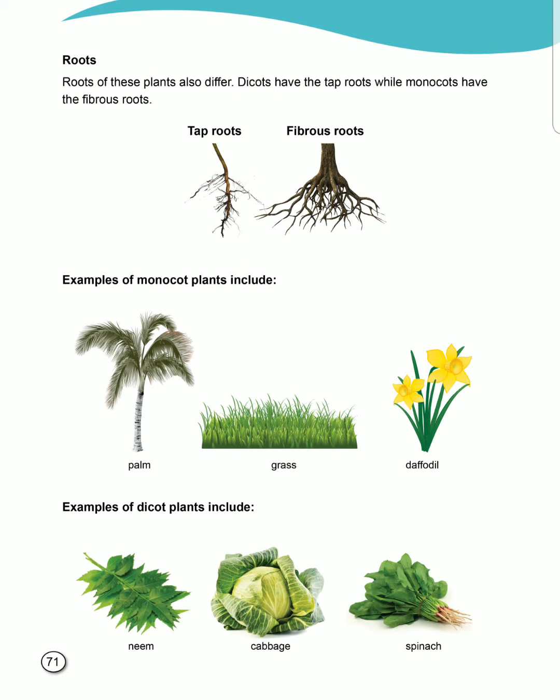Moving on to page number 71: Roots. How are the roots of monocot and dicot different? Dicots have a tap root, as you can see in the picture, whereas monocots have fibrous roots. Examples of monocot plants include palm tree, grass, and daffodil. Examples of dicot plants include neem, cabbage, and spinach.